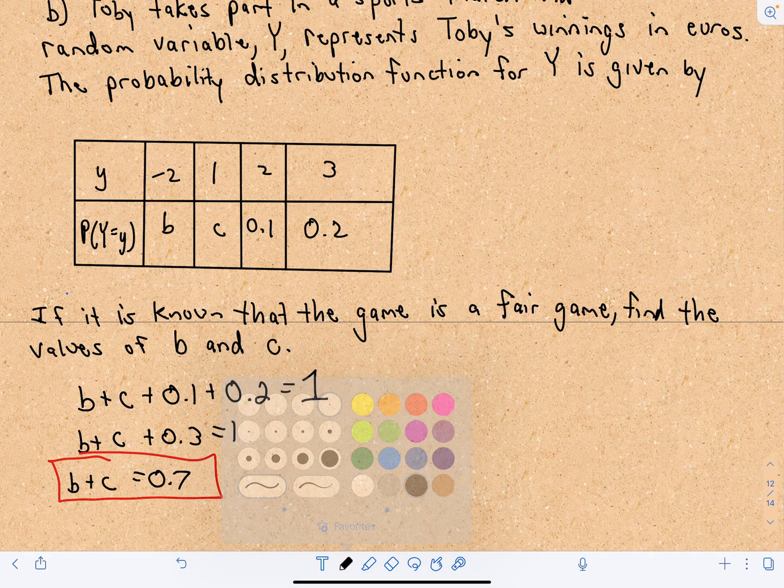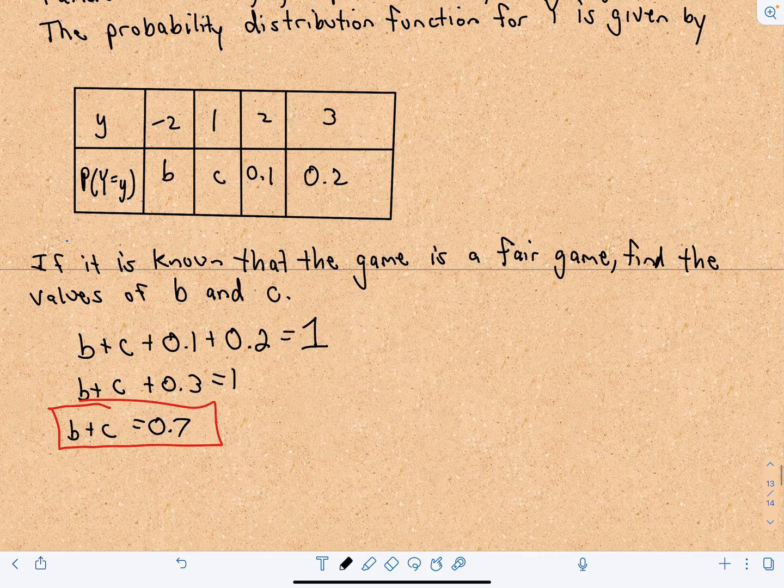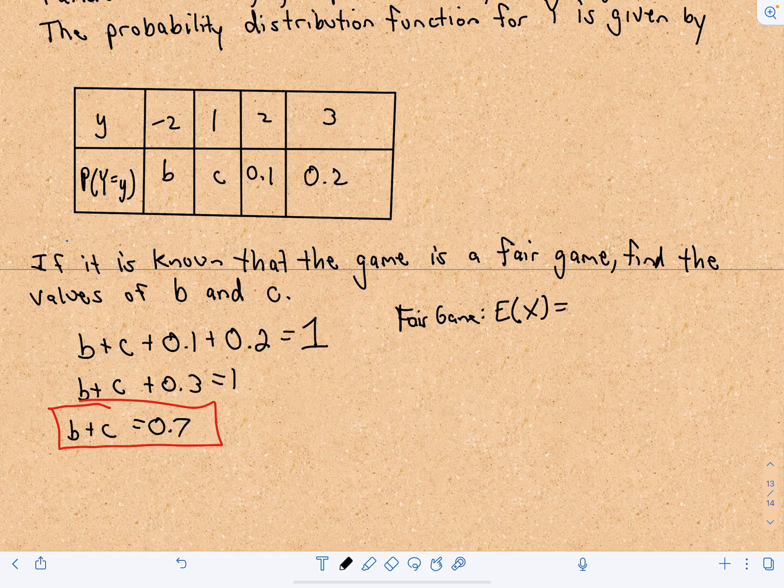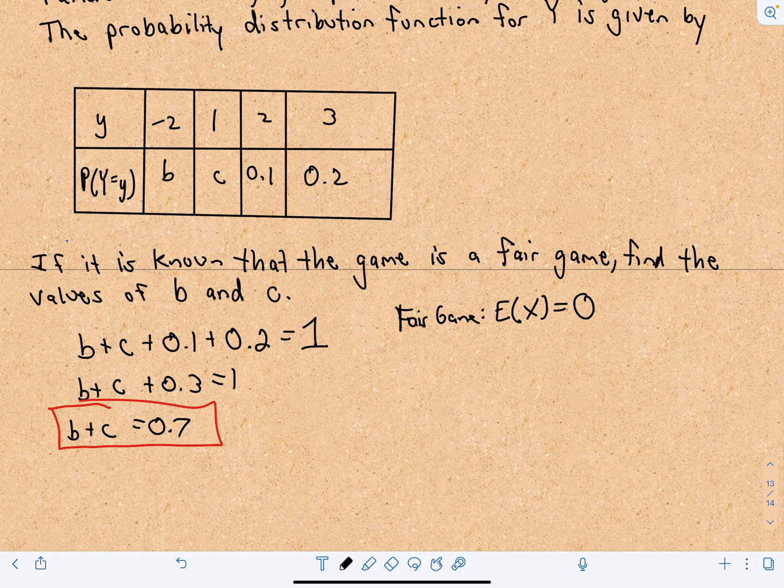And now we're going to make use of the expected value. If it's a fair game, that means that the expected value is going to be 0. It means if you play this game in the long run, you're not earning any money. You're not winning. You're not losing. That's considered a fair game. So that's something that's certainly important.